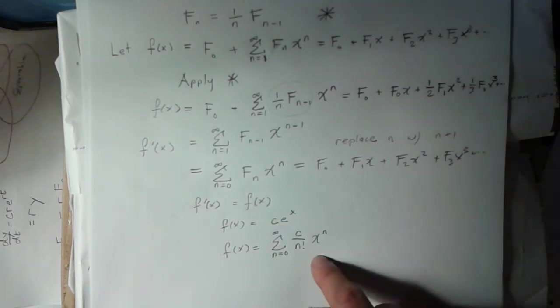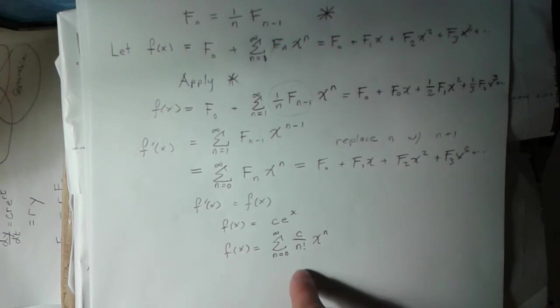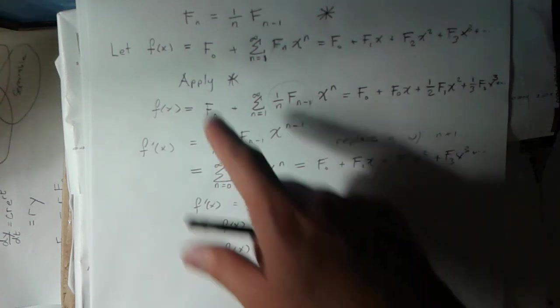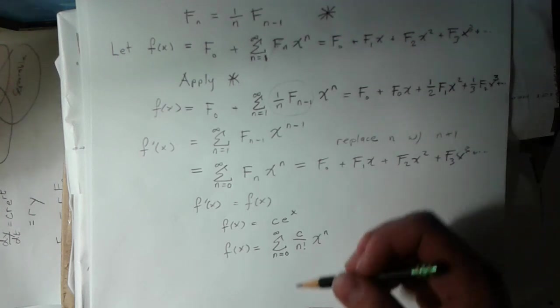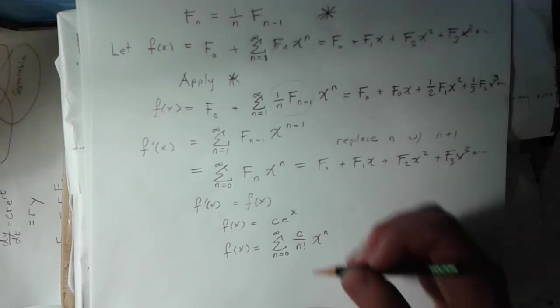This is f of x. And the idea is that the coefficients of this—this is f of x. The coefficients of this must be the same as what we said the coefficients are up there, which was just f sub n.